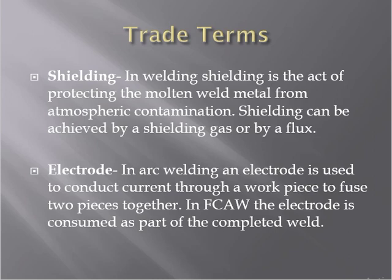An electrode in arc welding is used to conduct current through a workpiece to fuse two pieces together. The current melts the material and the weld joint is formed. In FCAW, the electrode is consumed as part of the completed weld.